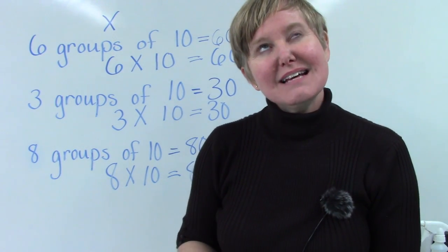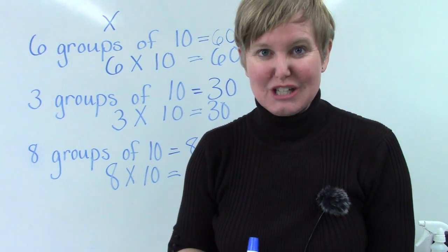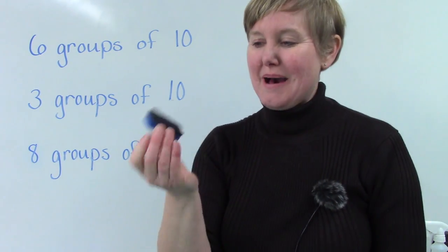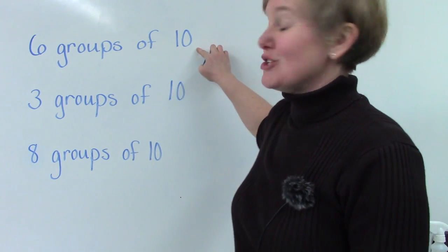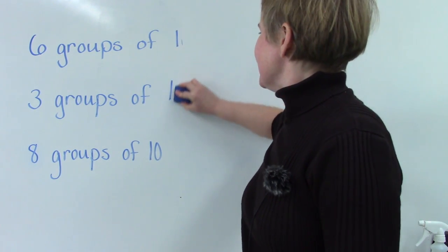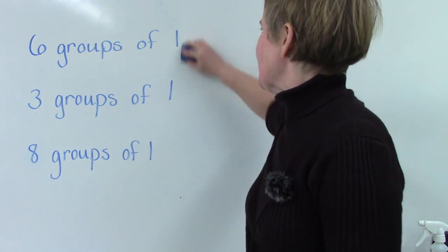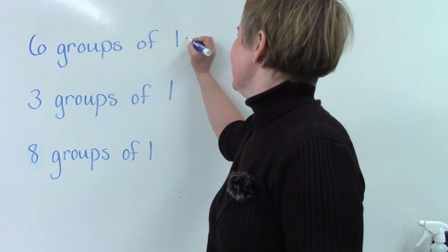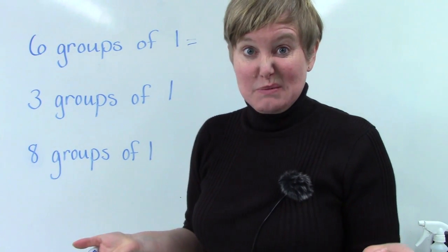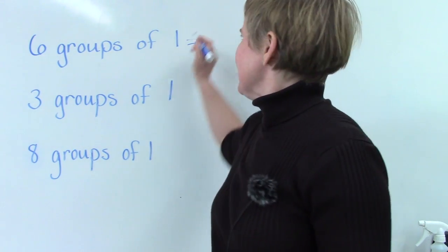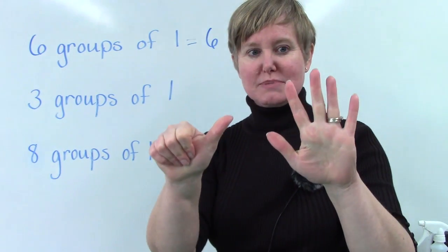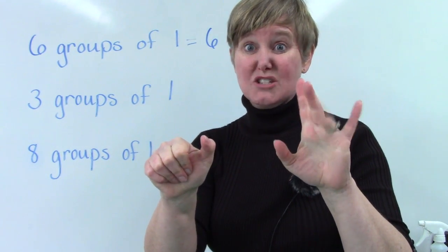Well, let's think about what this would look like if we were multiplying by one. So with my eraser, I'm going to change groups of 10 to say groups of one. If you had six groups of one, how many would you have? Well, six of course, if you have six groups and there's just one in each group? That's six.